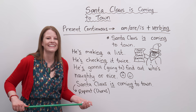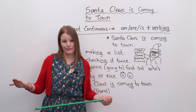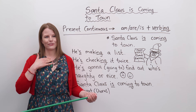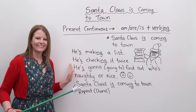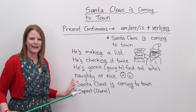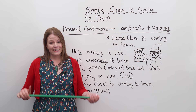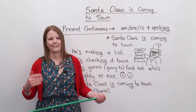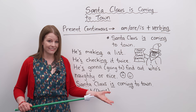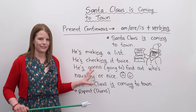Now let's actually sing this song together. You can listen to me sing it first and then pause the video, go back, and sing it with me. He's making a list. He's checking it twice. He's gonna find out who's naughty or nice. Santa Claus is coming to town. If you want to hear a beautiful voice sing this, check out Michael Bublé or Mariah Carey or Bing Crosby. This is a great song to memorize — you don't have to memorize the whole thing, but you can if you want.